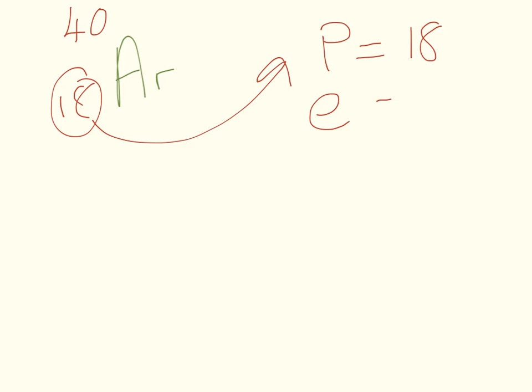Argon has a mass of 40 and an atomic number of 18. So the atomic number tells us the protons, 18, tells us the electrons, 18. And the neutrons is the mass number minus the atomic number. So it's 40 minus 18. So that equals 22.